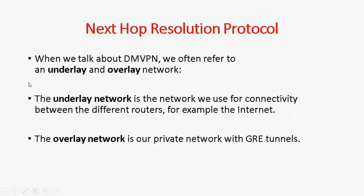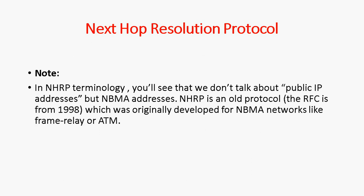When we talk about DMVPN, we often refer to an underlay and overlay network. The underlay network is the network used for connectivity between different routers — for example, the internet — which uses public IP addresses. The overlay network is our private network with the GRE tunnels, using private IP addresses.